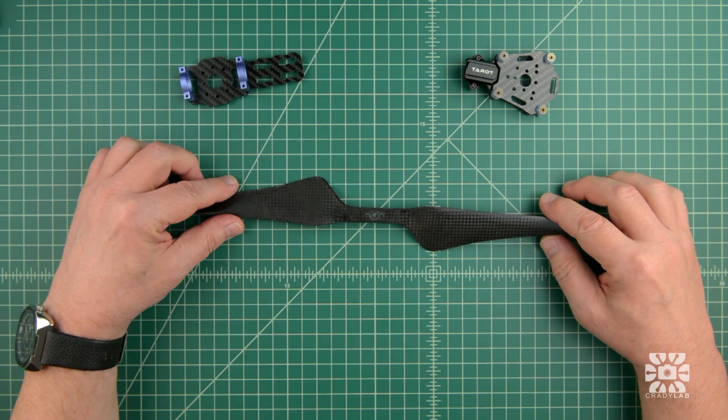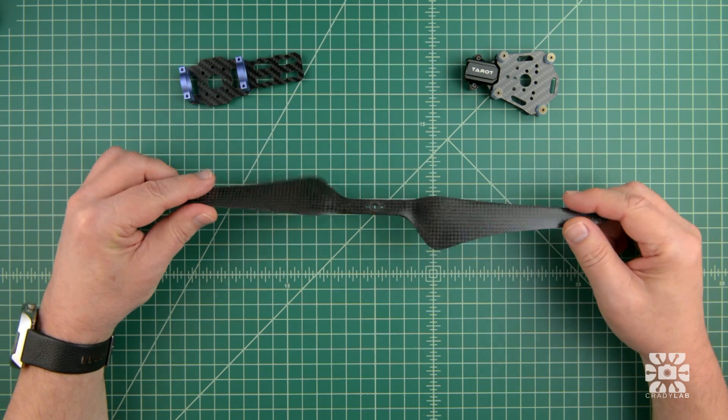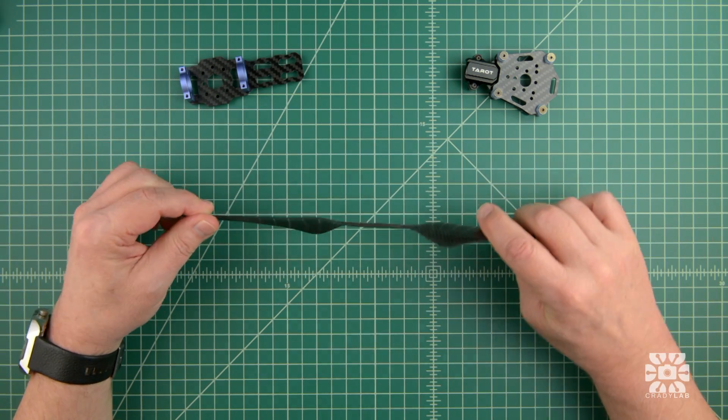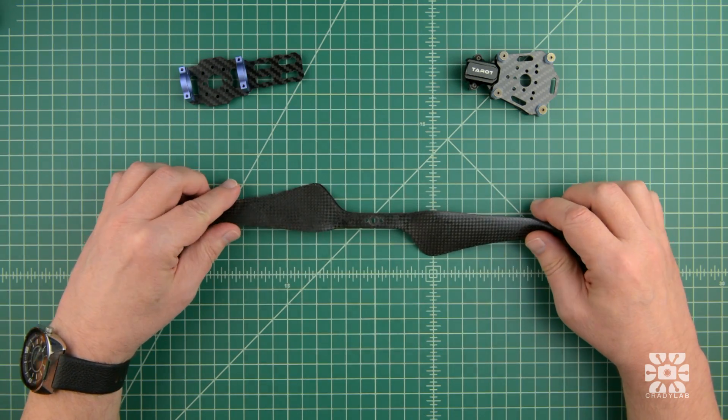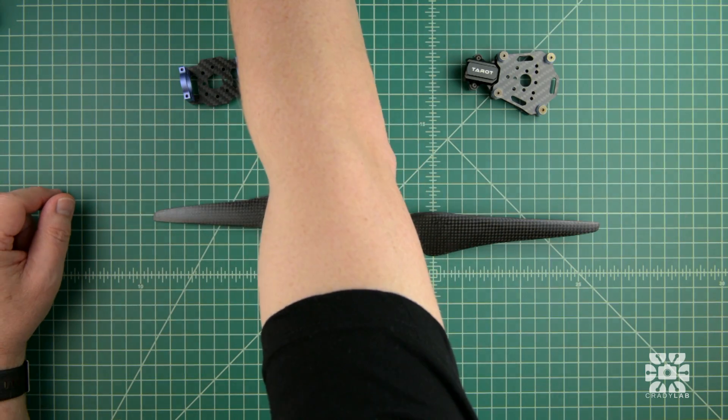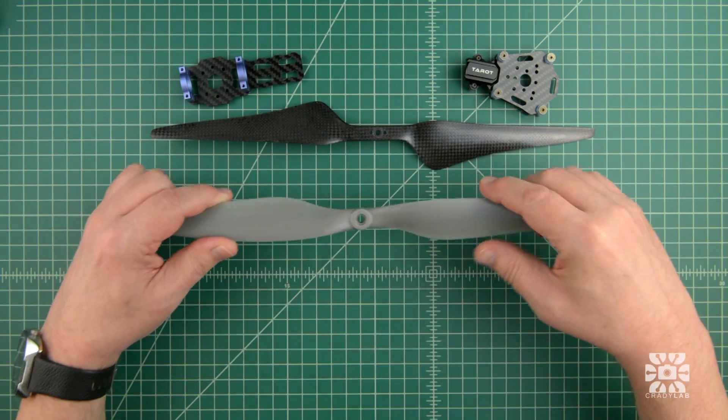So there you have it. Among the carbon fiber props I tested, the Hobby King with its radical blade shape offers the best vibration performance. What I found surprising was the APC prop produced the least amount of vibration overall, even when compared head to head against carbon fiber.